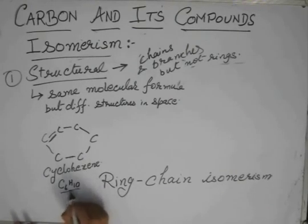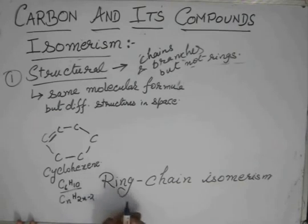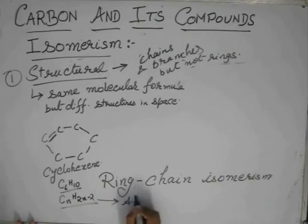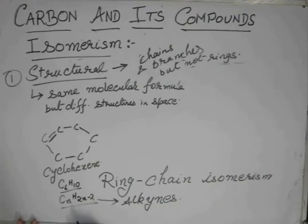And what's C6H10? Doesn't it look similar to CNH2N-2? N is 6, H is 2 into 6, 12 minus 2, 10. And what is this formula? This is the formula for alkynes.